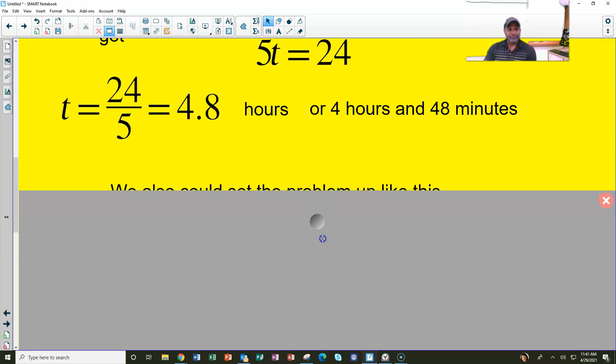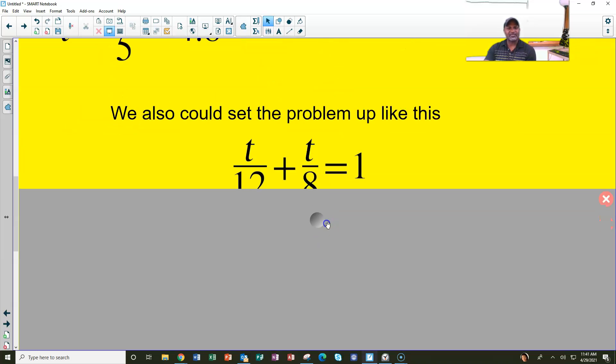Or we can set the problem up like this. T over 12 is the fraction amount that one painter has done in an hour. And T over 8 is the fraction amount that another painter has done in an hour. And if you add that, that equals to the whole job. If we knew what T was, then that would equal to one.